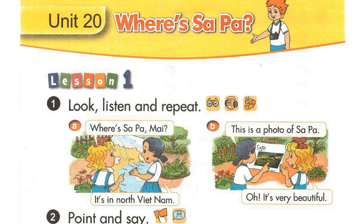A. Where's Sa Pa, Mai? It's in North Vietnam. B. This is a photo of Sa Pa. Oh, it's very beautiful.